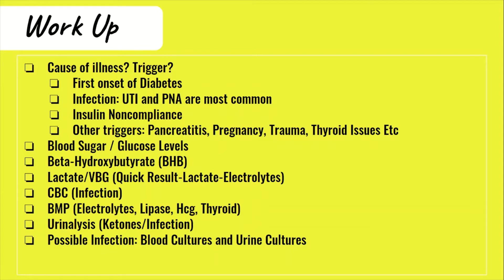A VBG may also be ordered — it results quickly and provides a rough value for electrolytes, the patient's pH, and a lactate, which if elevated signals hypoperfusion. A CBC is useful to detect infection or other triggers like anemia. A basic metabolic panel gives electrolytes, organ-related lab values, and the bicarb needed to calculate the anion gap. A urinalysis can detect ketones, infection, and other findings. If infection is suspected, blood and urine cultures can be ordered, along with an abdominal CT and chest X-ray.